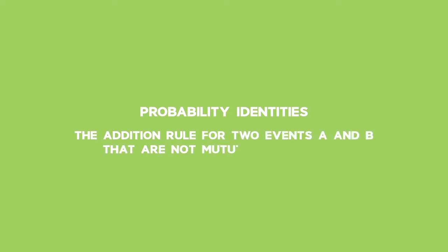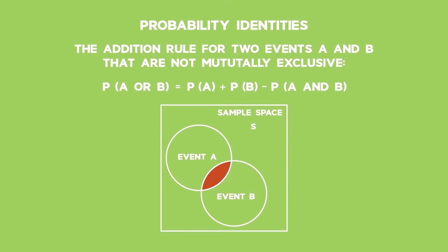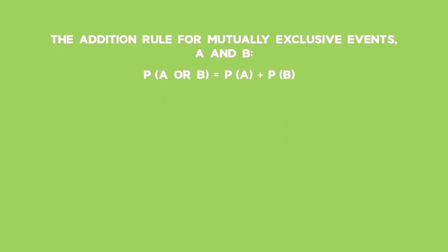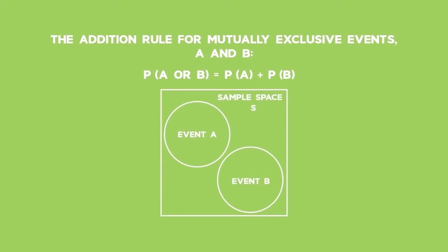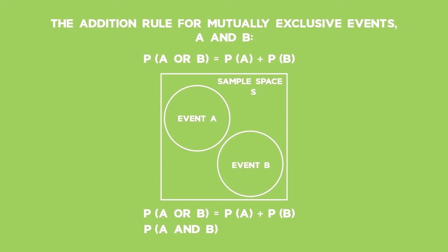You will use the following probability identities for compound events. The addition rule for two events A and B that are not mutually exclusive states that the probability of A or B is equal to the probability of A plus the probability of B minus the probability of A and B. The addition rule for mutually exclusive events A and B states that the probability of A or B is equal to the probability of A plus the probability of B. This rule is used when the two sets do not have an intersection, and is a special case of the general addition rule where the probability of A and B is equal to zero.